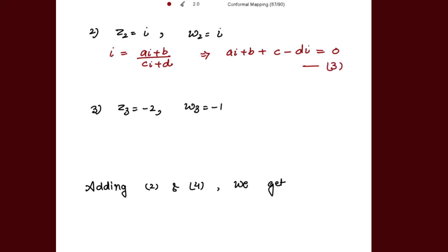Then putting z3=-2 and w3=-1. We get: -1 = (-2a+b)/(-2c+d), which gives us 2a - b + 2c - d = 0. Let's name this equation 4.